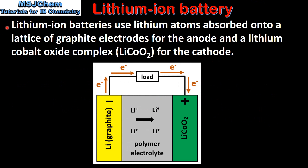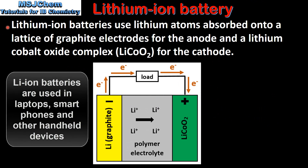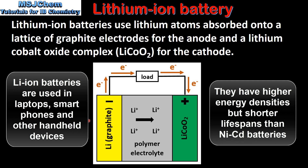And finally we look at the lithium ion battery. Lithium ion batteries use lithium atoms absorbed onto a lattice of graphite electrodes for the anode, and a lithium cobalt oxide complex for the cathode. Here we have a diagram of a lithium ion battery — the anode is lithium atoms on graphite and the cathode is a lithium cobalt oxide complex. Lithium ions pass from the anode to the cathode in the polymer electrolyte, while electrons pass in the external circuit from the anode to the cathode.